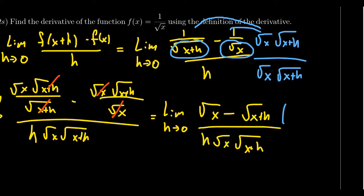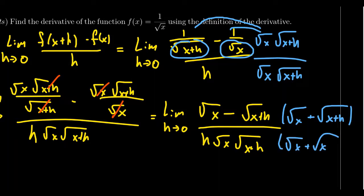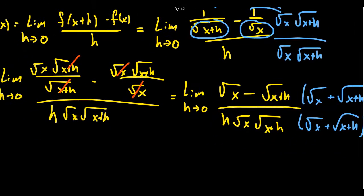So we're going to multiply again by a strategic number one — this time by the square root of x plus the square root of x plus h — making sure we do it to the denominator as well so the fraction stays proportional. When we do that, we're going to FOIL out the numerator.